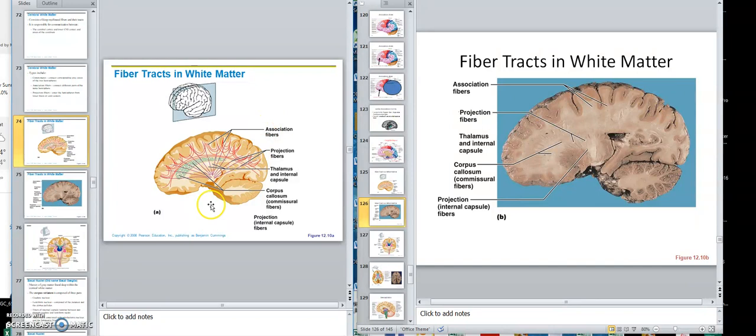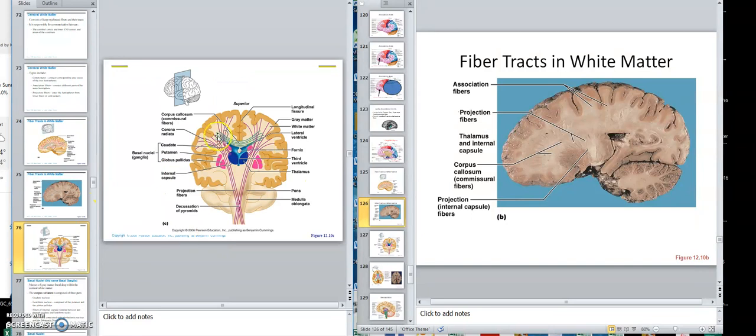Projection go down or up. Projection going down would eventually get into the tracks in the spinal cord. And then commissure would go across. We already showed that.